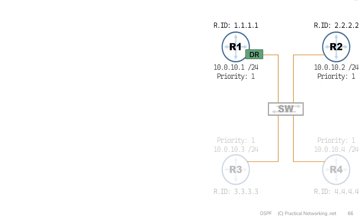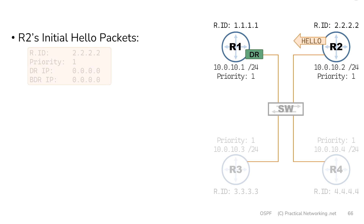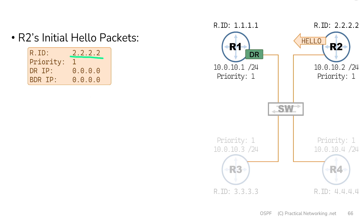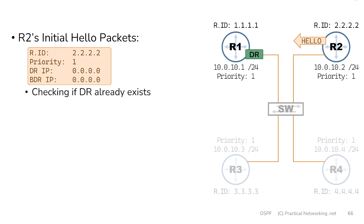Once OSPF is enabled on router 2, router 2 is also going to start out by sending hello packets. Just like with router 1, router 2's initial hello packet is going to include these four fields. It's going to include its own router ID of 2.2.2.2, its configured priority number of 1, and the DR IP and BDR IP are going to be all zeros. Just like before, router 2 is trying to see if a DR already exists — this is the process any router uses when it's first enabled with OSPF. However, in this case there is a DR on this link, and router 1 is still sending out those periodic hello packets.